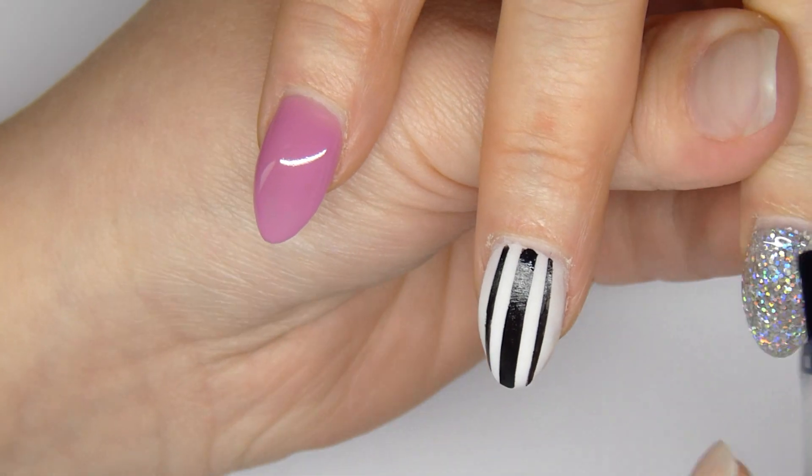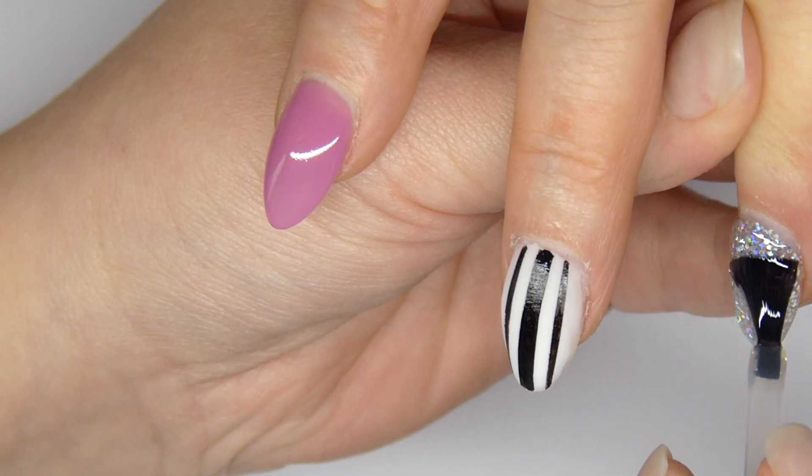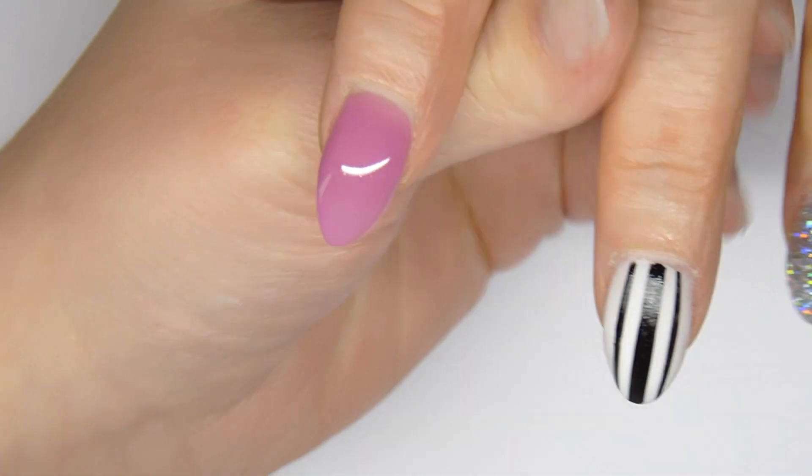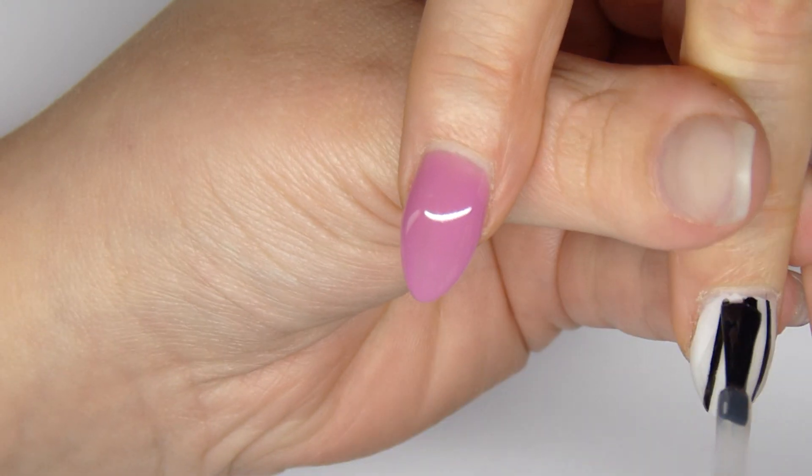For the ring finger I applied the Bio Seaweed top gel and let it cure. And then I did the same for the rest of the nails.